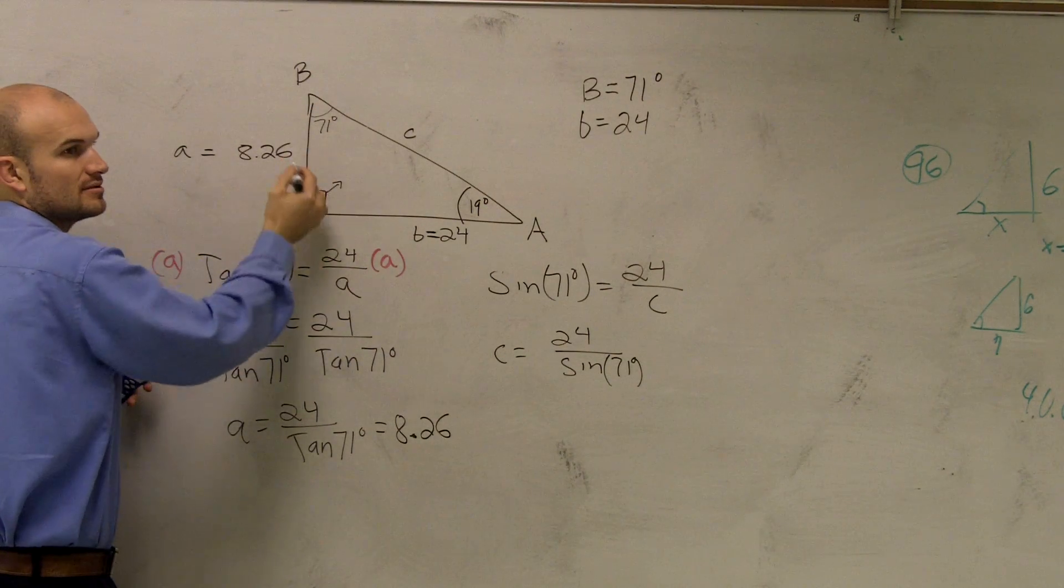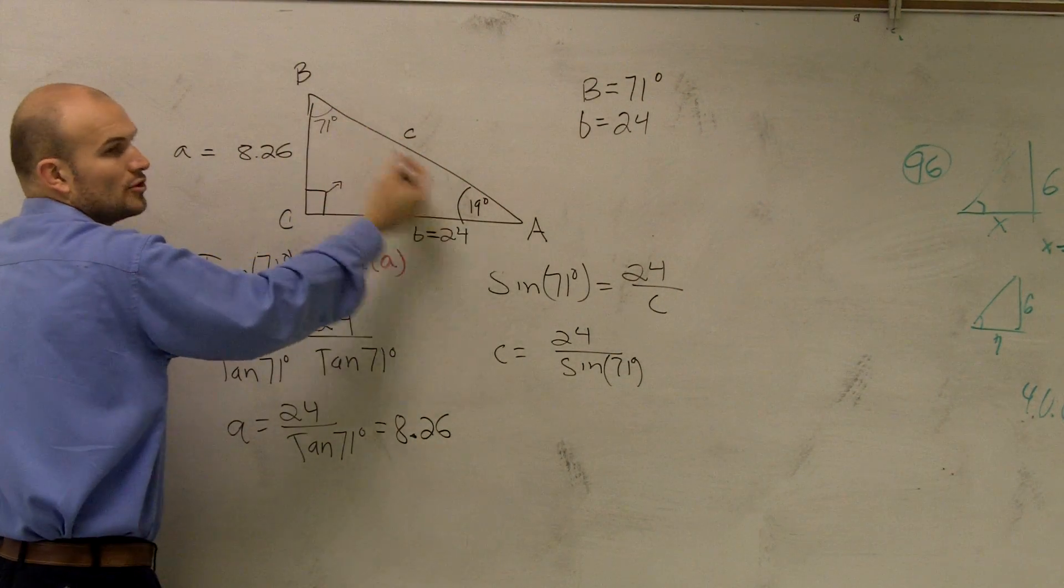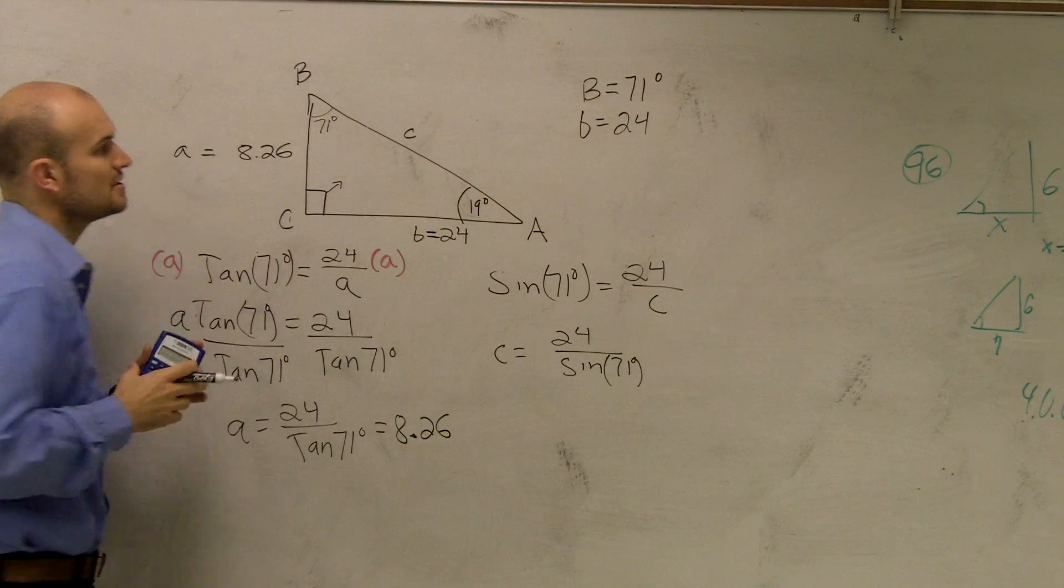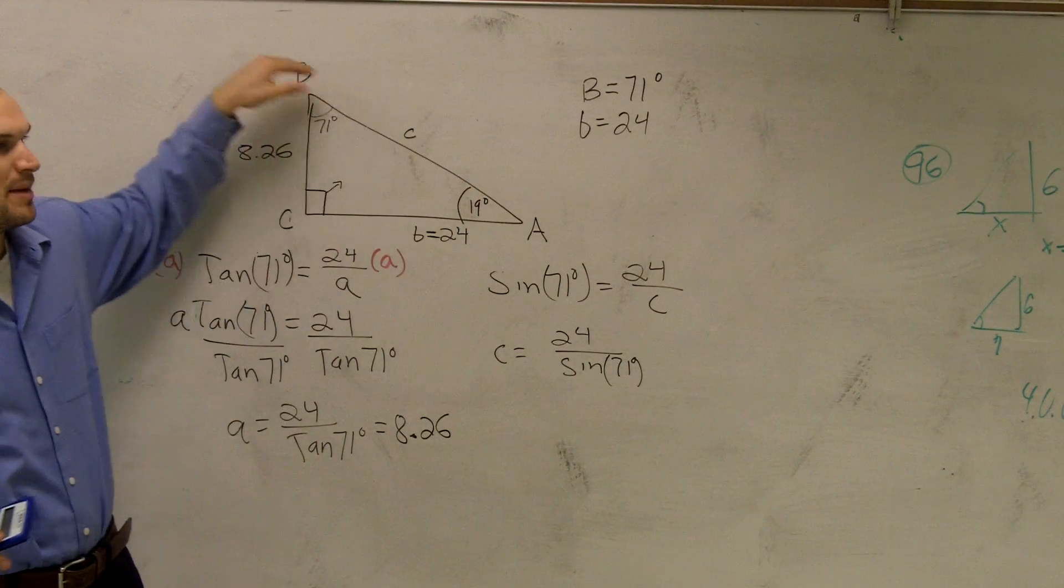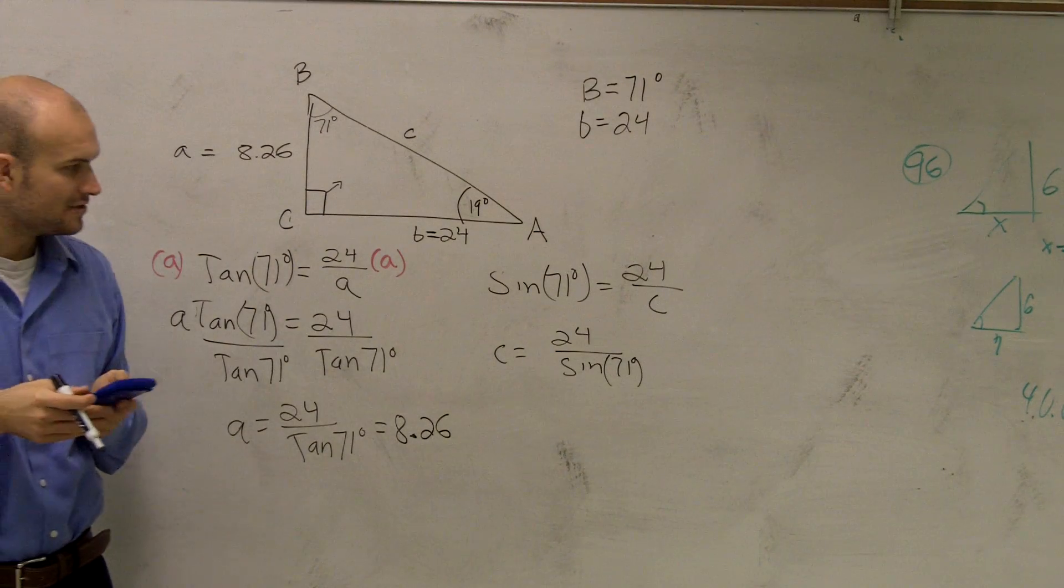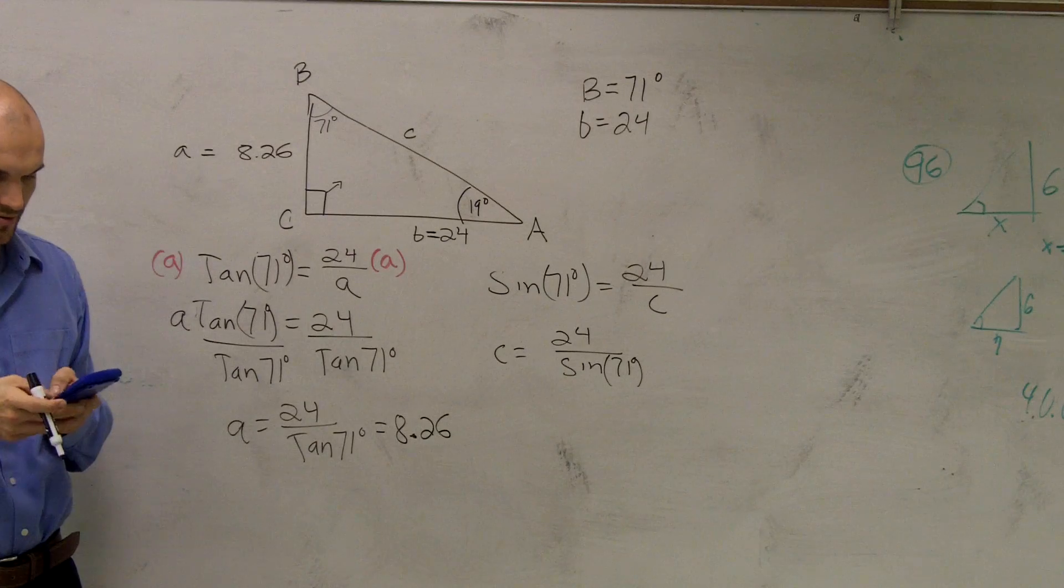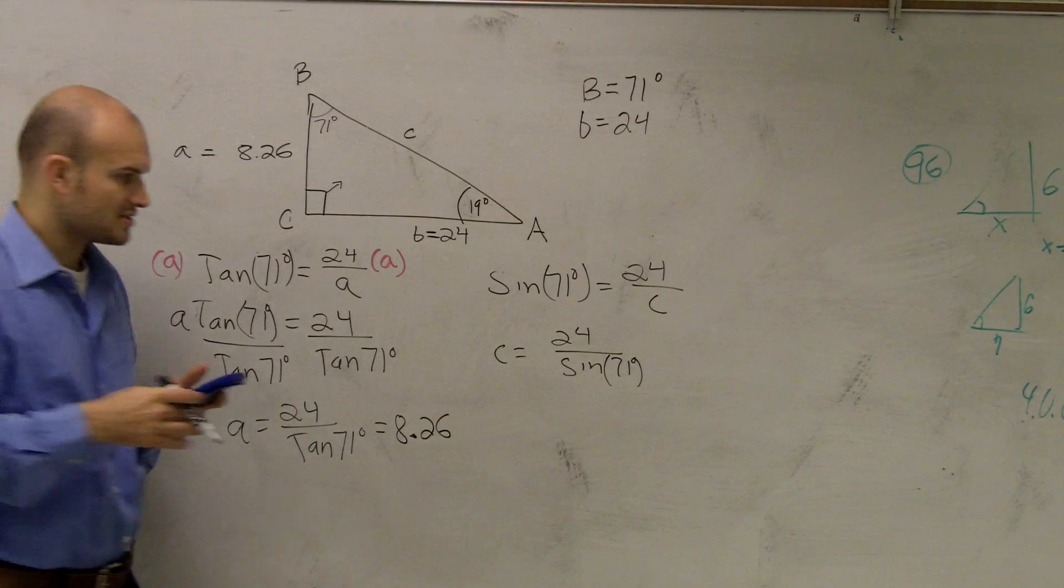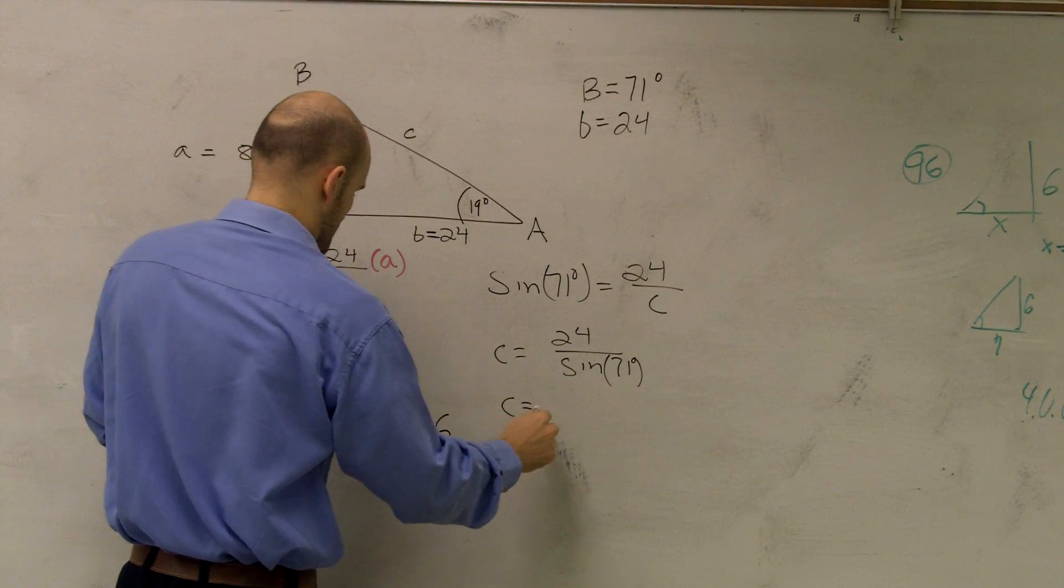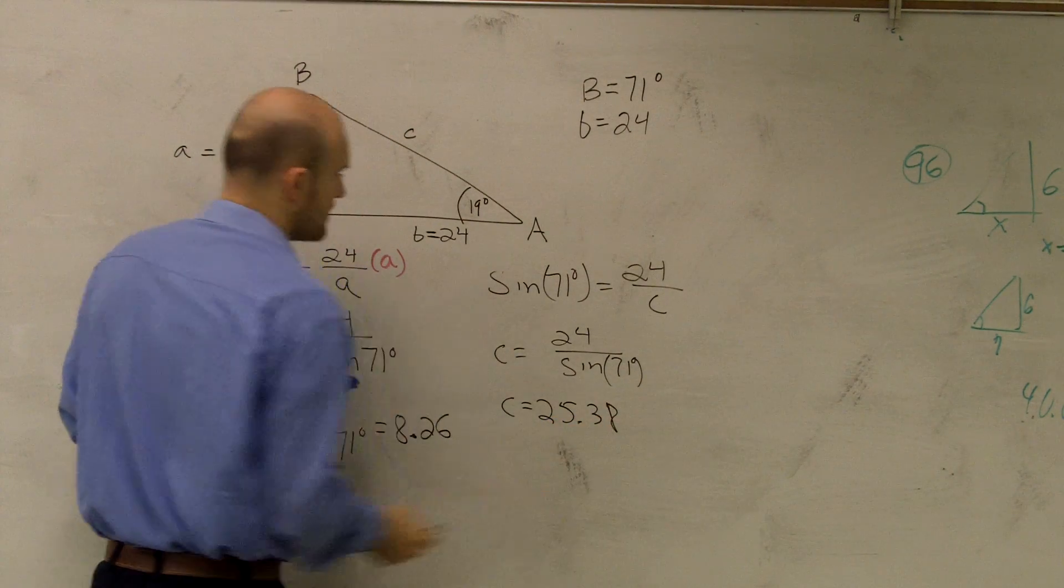So when I do 24 divided by sine of 71, I get 25.38.